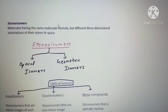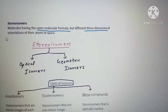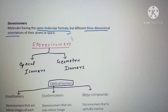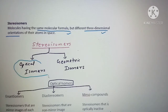Stereoisomers are defined as molecules having the same molecular formula but different three-dimensional arrangement or orientation of atoms. Stereoisomers are classified into two types: one is optical isomers, and the second is geometrical isomers.